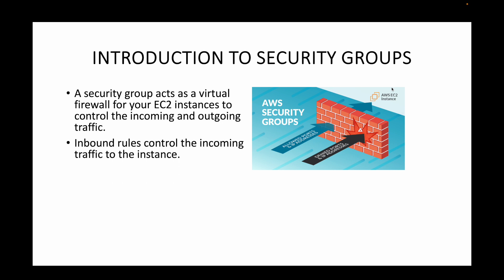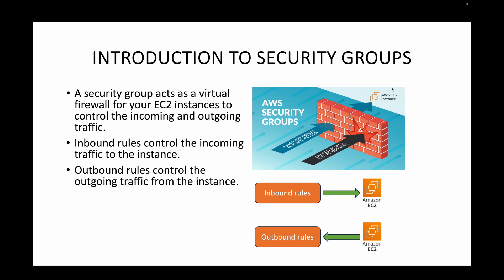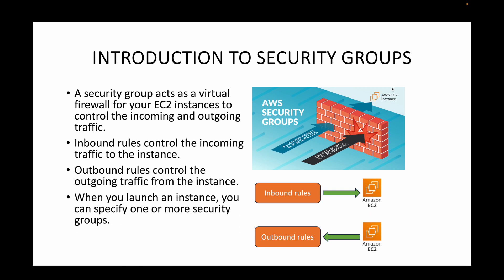There are two types of traffic: incoming and outgoing. Inbound rules control the incoming traffic — what traffic you want to allow to your EC2 instances from the internet. Outbound rules control the traffic going out of your EC2 instance — what applications on certain port numbers your instance can access. Both can be controlled through your security group rules.